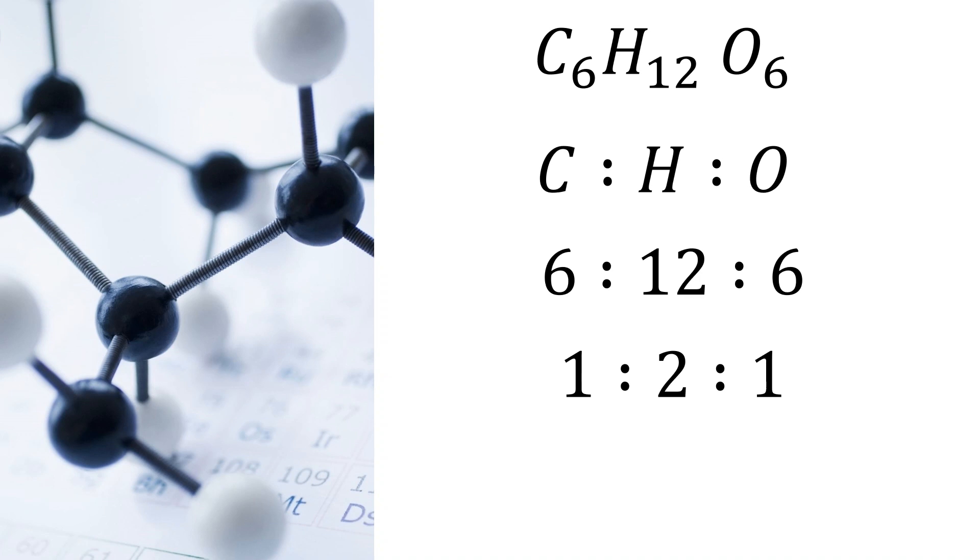So we divide all of these by six, and that gives the ratio of one to two to one. So that's one carbon, two hydrogens, to one oxygen. And then we simply apply those numbers in the correct place, and we get the empirical formula. And that simply cannot be simplified any further. So we know it's an empirical formula.